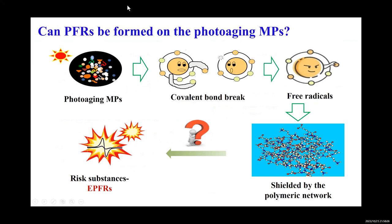We all know that plastics are also a kind of man-made polymer. After entering into the environment, microplastics can be fragmented and weathered by sunlight irradiation, biodegradation, water power, or wind, and decomposed into smaller pieces or particles, leading to significant changes in their structure and physicochemical properties. During the aging process, the microplastics will break covalent bonds and form free radicals. If these free radicals can be stabilized in the complex network structure of polymers, they may form EPFR.